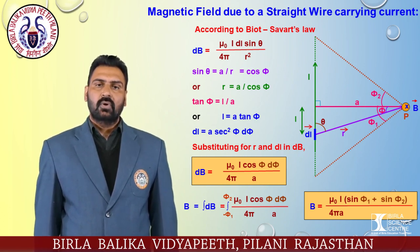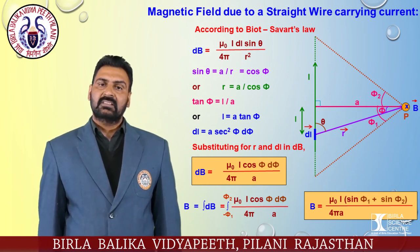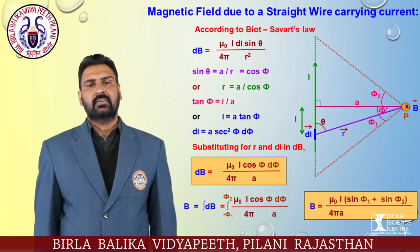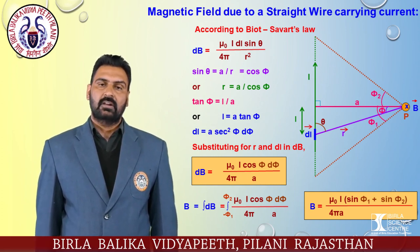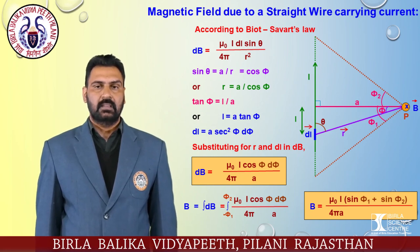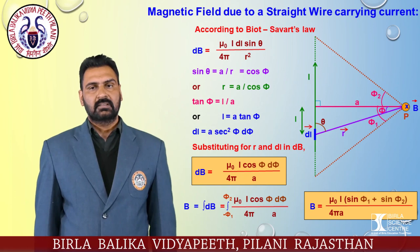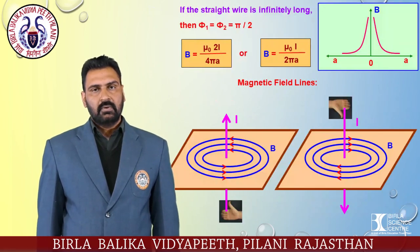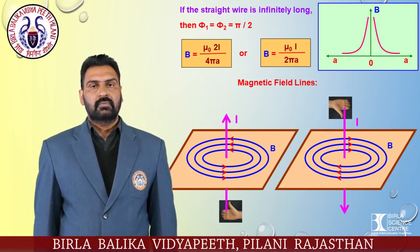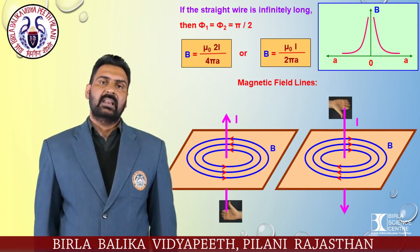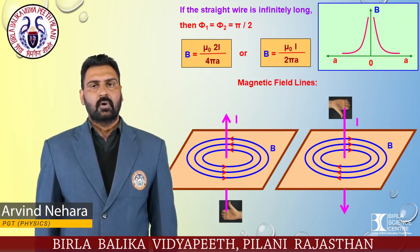The magnetic field due to the whole conductor is obtained by integrating with limits −φ₁ to φ₂ (φ₁ is taken negative since it is anti-clockwise): B = ∫dB = (μ₀ i / 4π a) · (sin φ₁ + sin φ₂). For an infinitely long straight wire, φ₁ = φ₂ = π/2, and since sin(π/2) = 1, we get the magnetic field B = μ₀ i / (2π a).